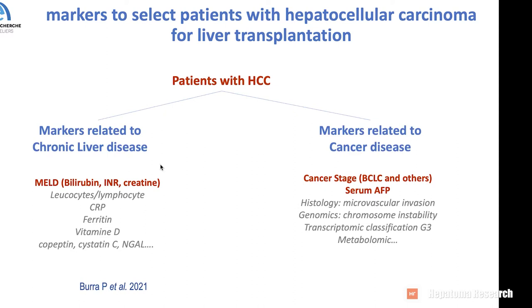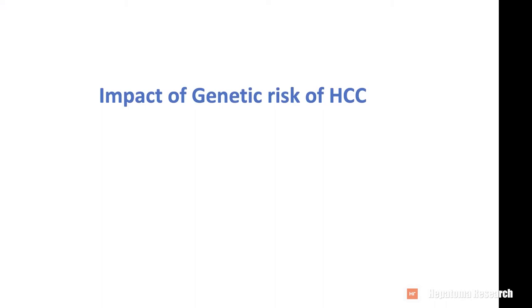We have the very classical cancer stagings — BCLC and others — and serum alpha-fetoprotein that is commonly used to select patients. All other markers are in fact not really used at this moment, and that's also the same in the domain of chronic liver disease. We have different markers that are in the pipeline but still in the field of research.